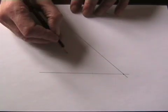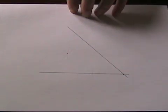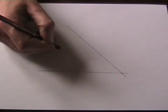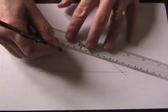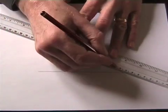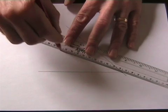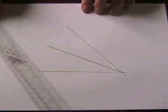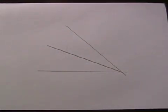And this point created by the final pair of arcs is the one I need to join to the original point to create my bisector of the angle. That's the bisection of an angle.